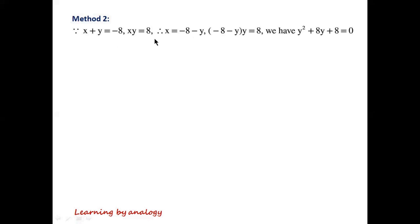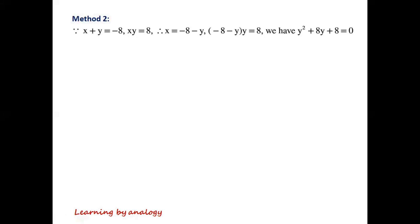Continuing Method 1, the expression simplifies. For Method 2, rearranging x plus y equals minus 8 gives x equals minus 8 minus y. Substituting this into xy equals 8, we have minus 8 minus y times y equals 8. Simplifying, we get y squared plus 8y plus 8 equals 0.